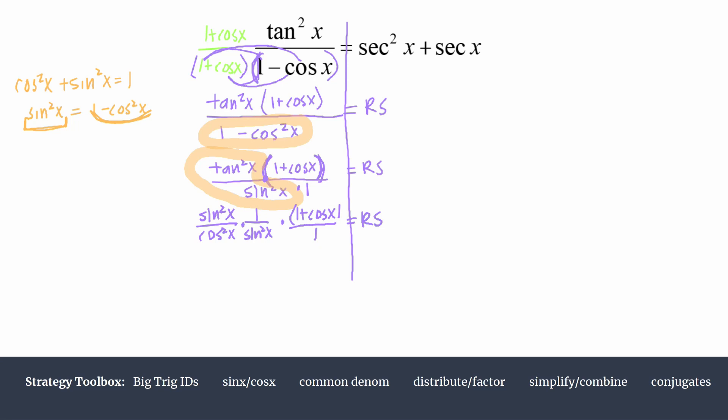As we pause and assess, this rewrite helps us cancel some common factors here of sine squared. Those go to 1. And so we're really left with